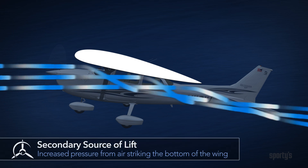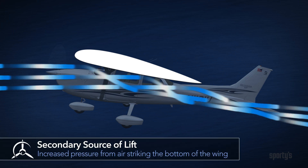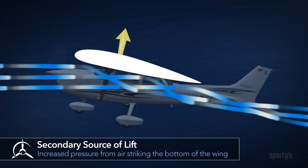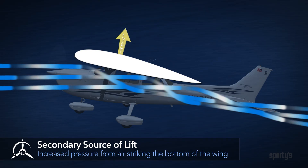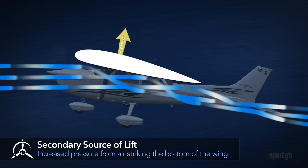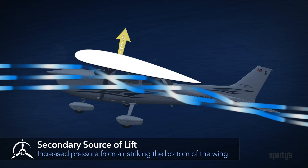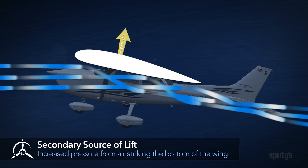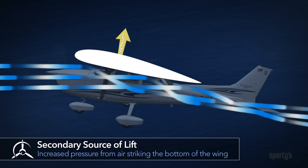As the wing pushes down on the air, the air exerts an equal and opposite force on the wing. The increased pressure on the bottom of the wing also creates lift.